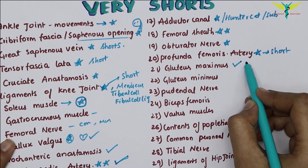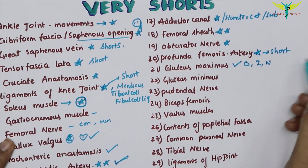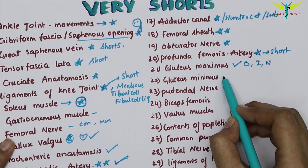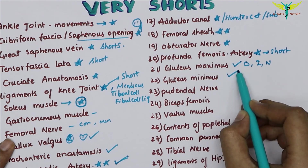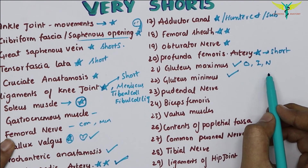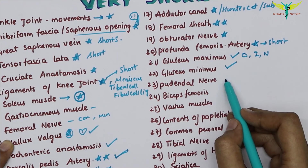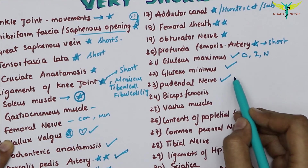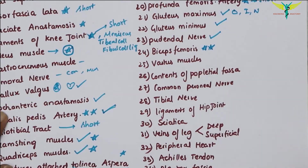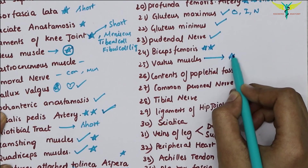The gluteus maximus is very very important for very short questions — write the origin, insertion, and nerve supply; no need for a diagram. The gluteus minimus follows the same pattern — origin, insertion, and nerve supply. The pudendal nerve is very important. The biceps femoris is very very important. The vastus group of muscles is very important.